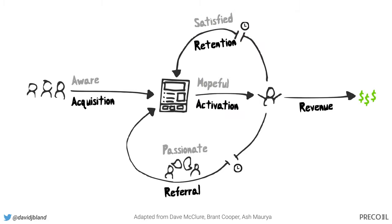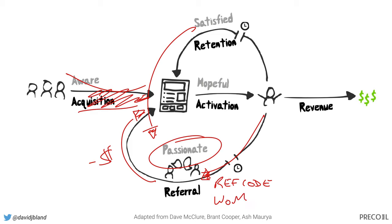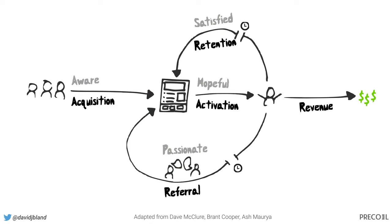Then it becomes: what do we do here with referrals? How do we get people more passionate? You want them to convert from satisfied to passionate, because if you bring in more customers organically through referrals, it saves you money. You might use referral codes, work on word of mouth, and reduce friction in how people refer others — you want that to happen quickly once they become satisfied. It's a progression over time; people usually don't instantly become passionate. Once we anchor our experimentation on referral, it can also impact our funding strategy.